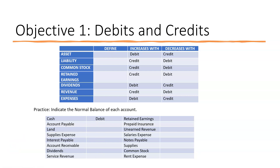Accounts payable — when you see the word 'payable,' it's almost always a liability. Payable is something you owe to somebody, so accounts payable is a liability; it increases with a credit, normal balance is a credit. Land is an asset — you own land if you use it in your business — so it's a debit. Supplies expense is an expense account; it increases with a debit, normal balance is a debit. Interest payable is another liability account, so the normal balance is a credit.